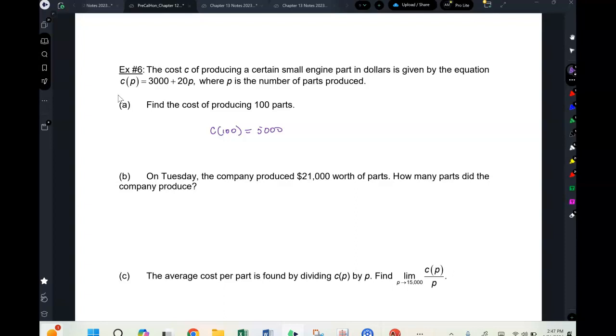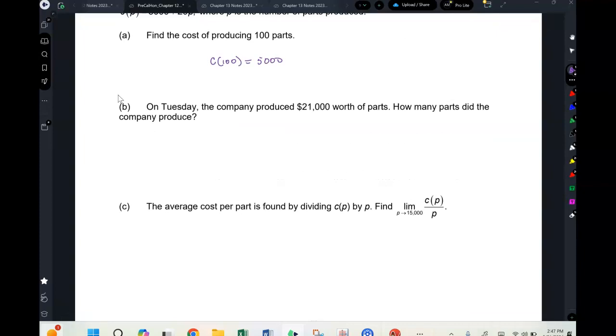Notice the notation, this is c of 100. This is like an algebra one question, but I'm just looking at notation. On Tuesday the company produced $21,000 worth of parts. How many parts did they produce? Right, perfect. So $21,000 equals $3,000 plus 20p. $18,000 equals 20p. p is 900. So 900 parts.